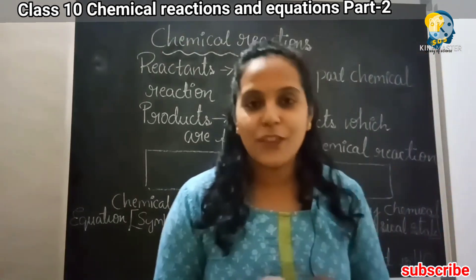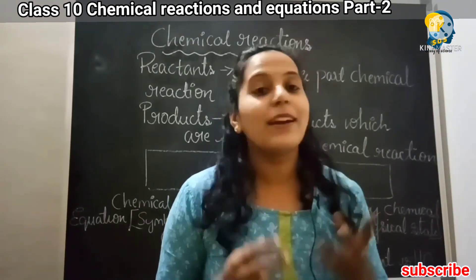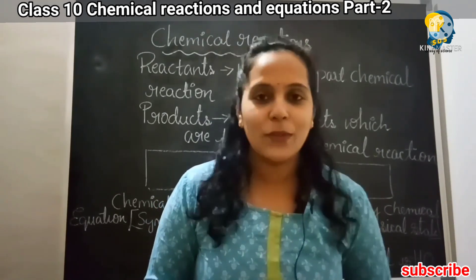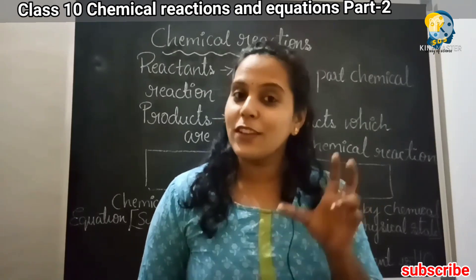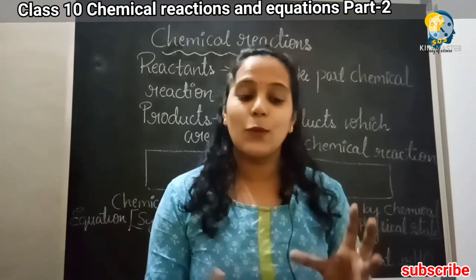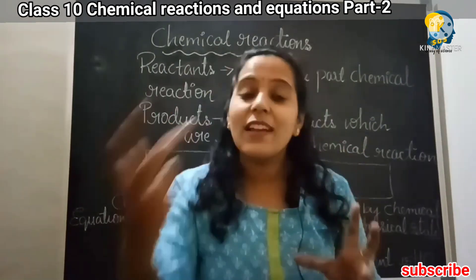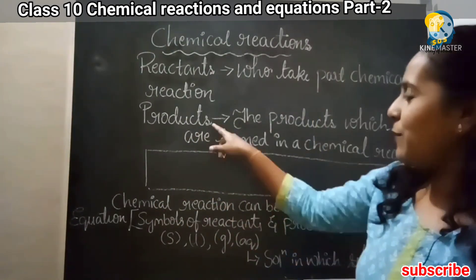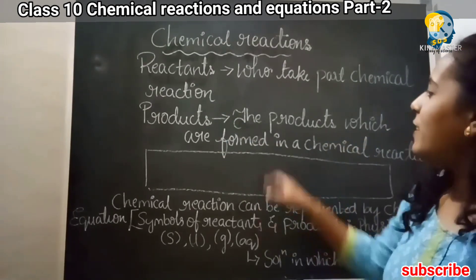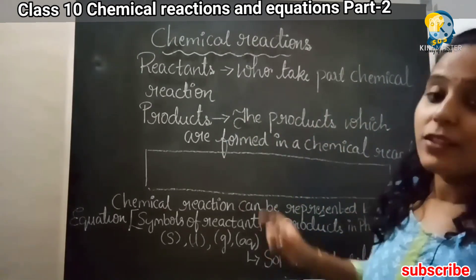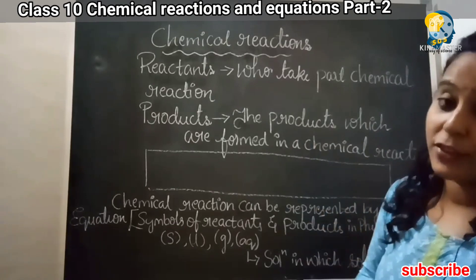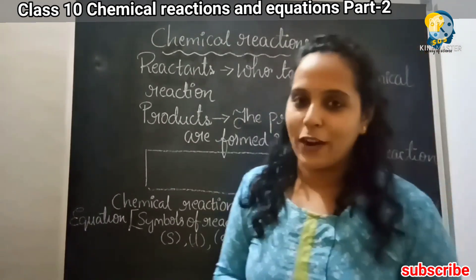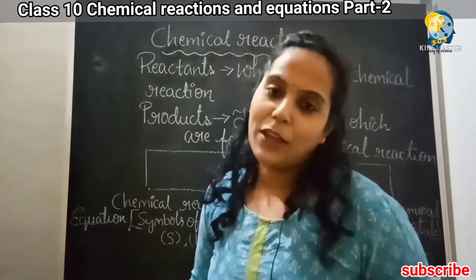Now, we will find a new product. That means a new substance is produced. The substance which is being produced, we will call it as a product. The products are formed in a chemical reaction once the reaction takes place. This is all about the reactants and products. Very simple.